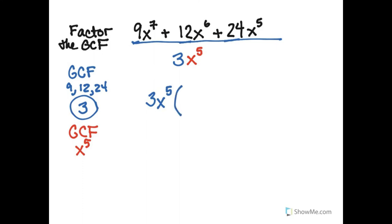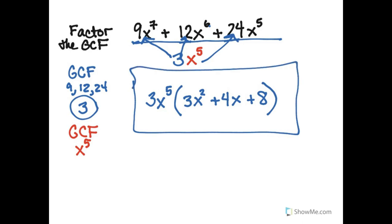It's now outside the parentheses. And I do each division. 3 goes into 9, 3 times. And x seventh divided by x fifth is x squared. Now 3 goes into 12, 4 times. And x sixth over x fifth is just x. And 3 goes into 24, 8 times. And x fifth divided by x fifth cancels out. And here is the factorization of the polynomial.